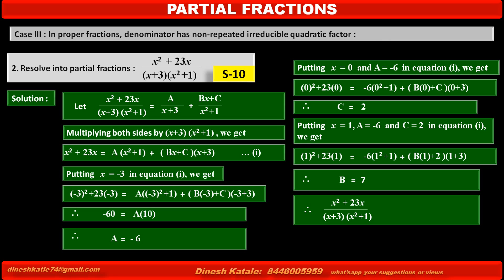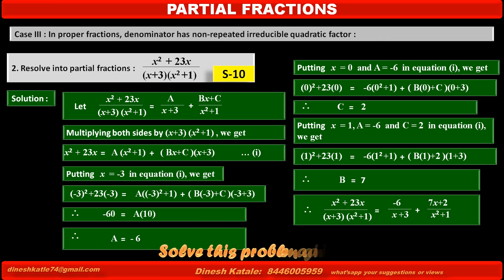Therefore, the given fraction (x² + 23x) / [(x+3)(x²+1)] equals -6/(x+3) + (7x+2)/(x²+1). For better understanding, take a pause here and try to solve this problem again in your notebook without copying.